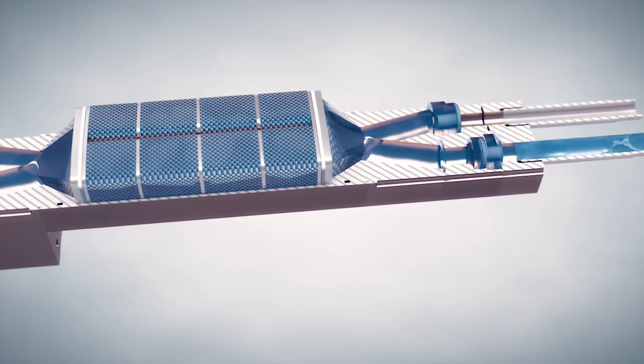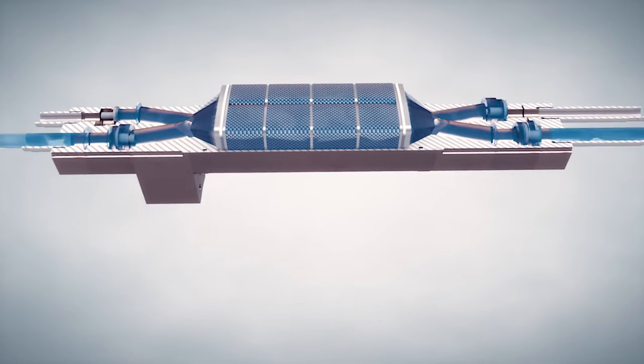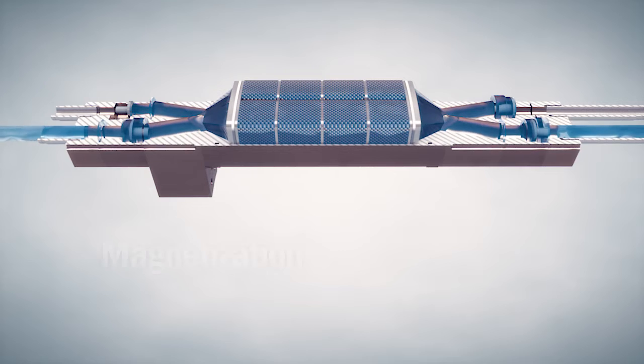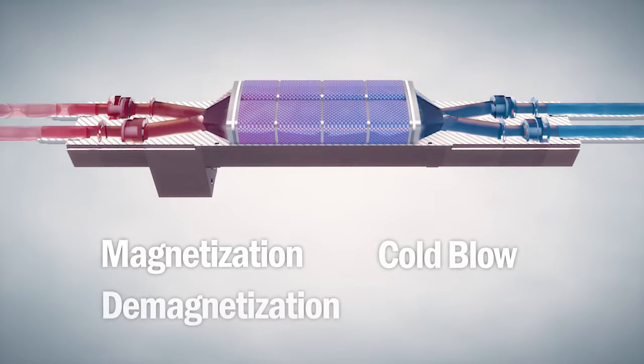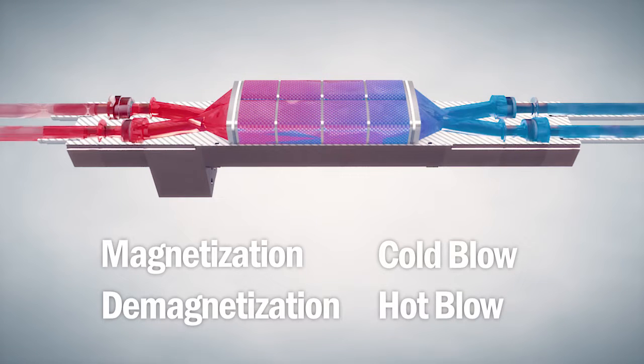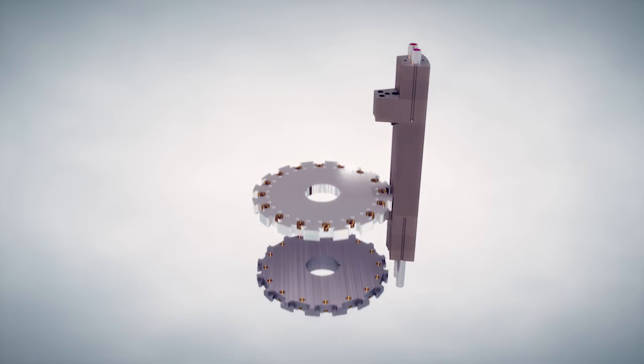Hence, the AMR beds are responsible for generating the system's cooling effect. The cooling cycle is composed of four stages: magnetization, cold blow, demagnetization, and hot blow. The magnetic field applied to the AMRs is generated by the magnetic circuit.